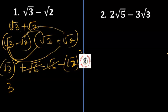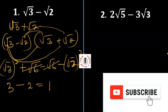Plus √6 minus √6 gives zero, and we're left with 3 minus 2, which equals 1. Okay, let's look at the second example.